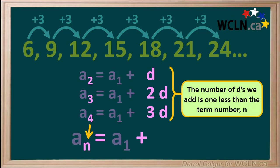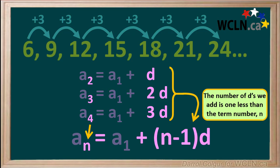And since the number of d's we add is 1 less than the term number n, we'll add n minus 1 times d to our equation. Study this for a few moments and make sure it makes sense to you.